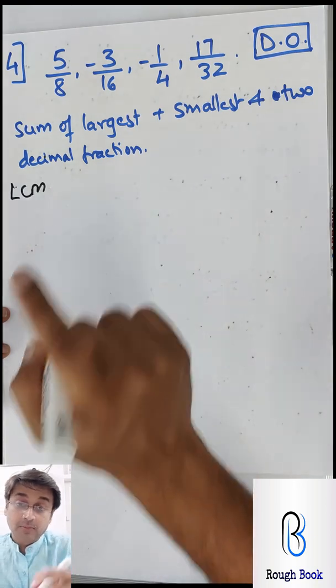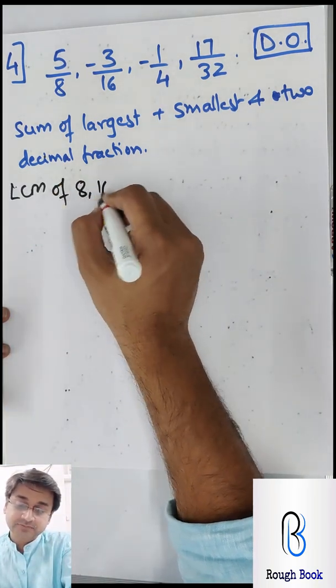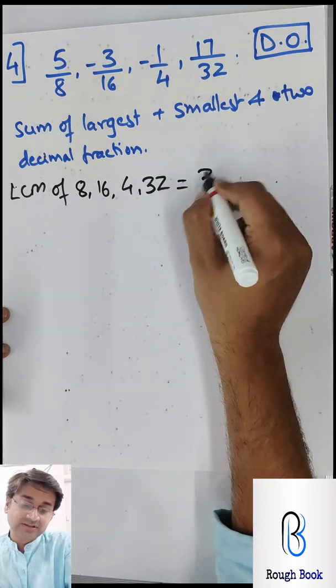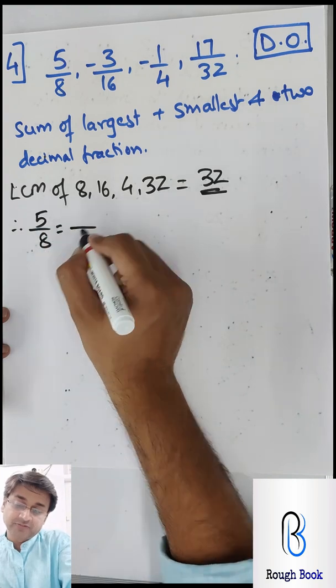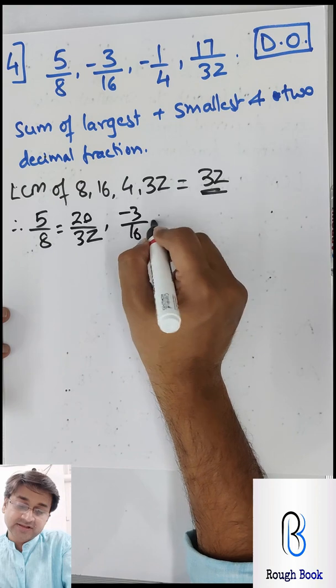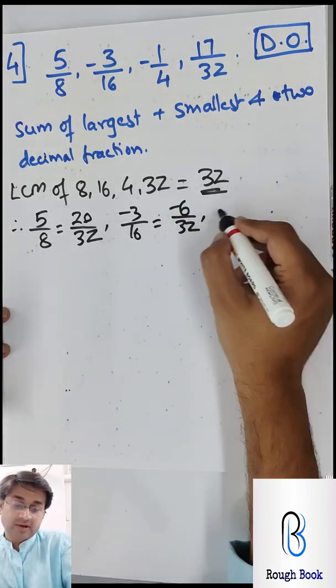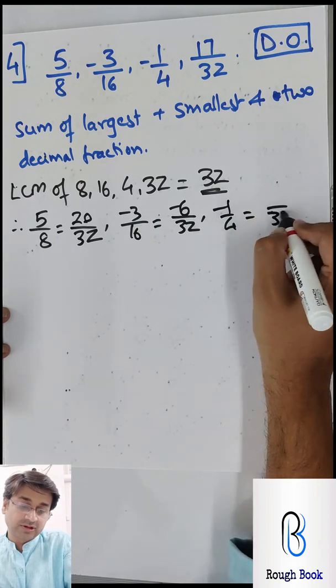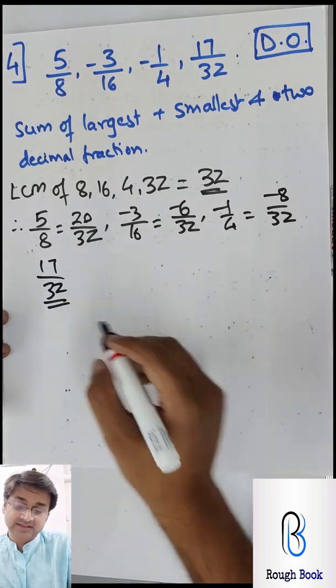So LCM - pause the video, don't cheat. So LCM of 8, 16, 4 and 32 is 32 itself. So therefore 5 by 8 will be dash by 32, so 4 times, so therefore 20. Minus 3 by 16, so 32, 2 times, so negative 6. Then minus 1 by 4, so again 32, 8 times, so negative 8. And 17 by 32 remains as it is.